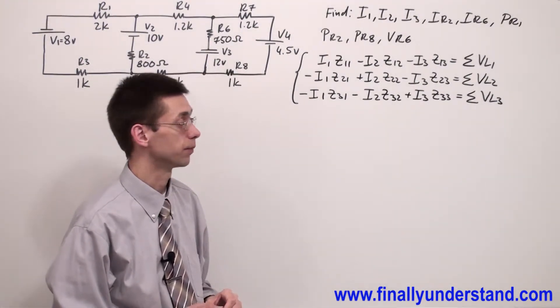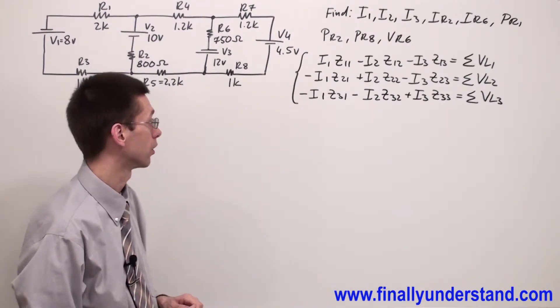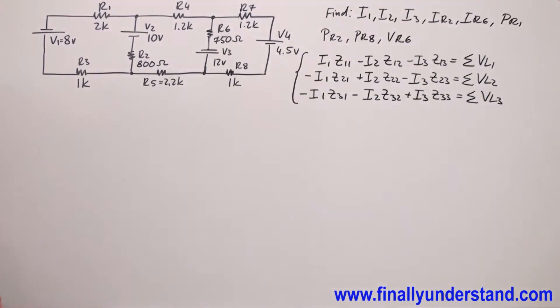We're going to start from the mesh equations like always. So first we have to find Z11. Z11 is the sum of the impedances in loop 1. This is my loop 1 and this is going to be my loop current I1.